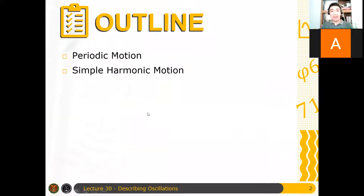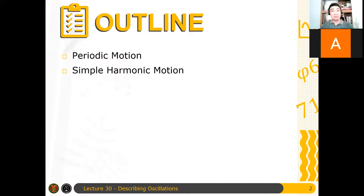Here's an outline of Lecture 30. The first topic is periodic motion — the general idea of what periodic motion is and the important quantities we determine. Second, we consider simple harmonic motion: what is the important condition for an oscillator to be in simple harmonic motion? After that, we'll get a differential equation, an equation of motion, which we will not solve using calculus directly. Instead, we'll use a heuristic approach.